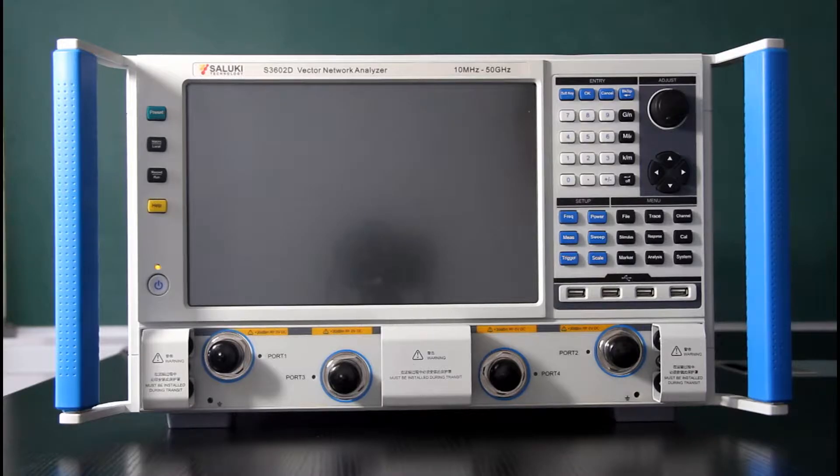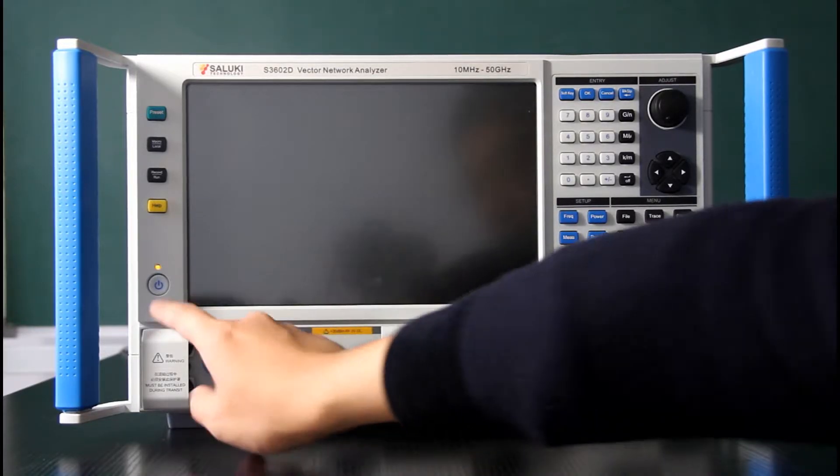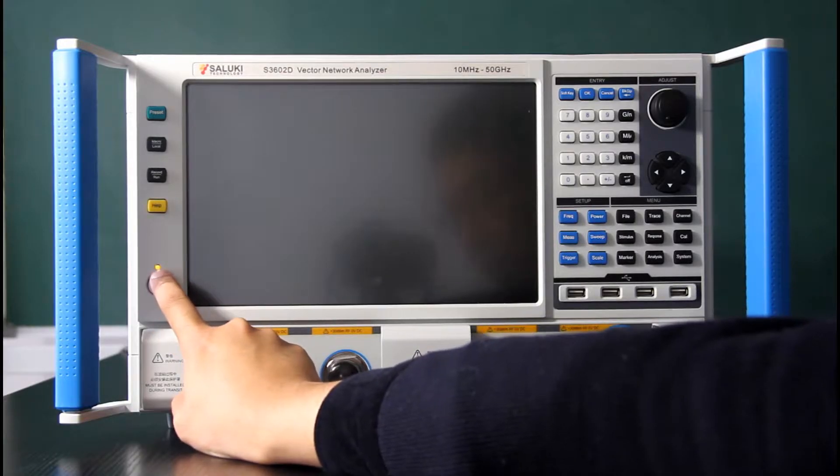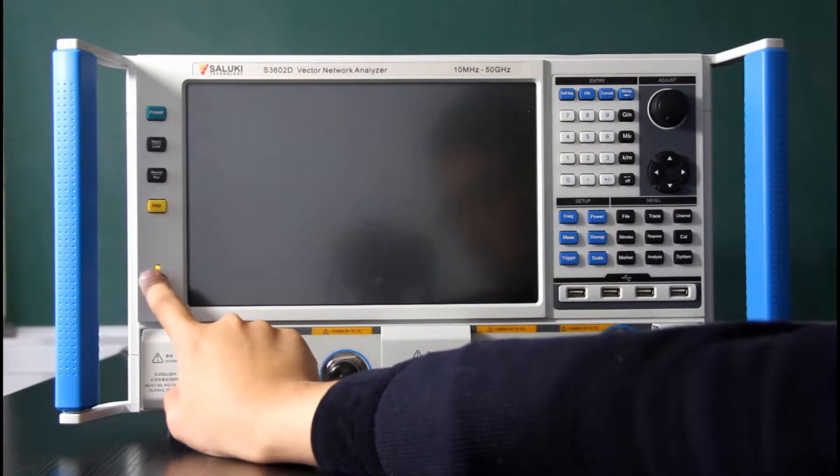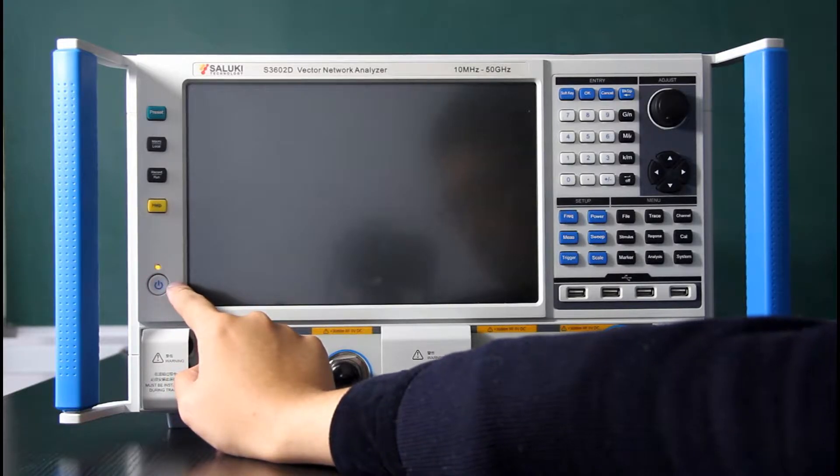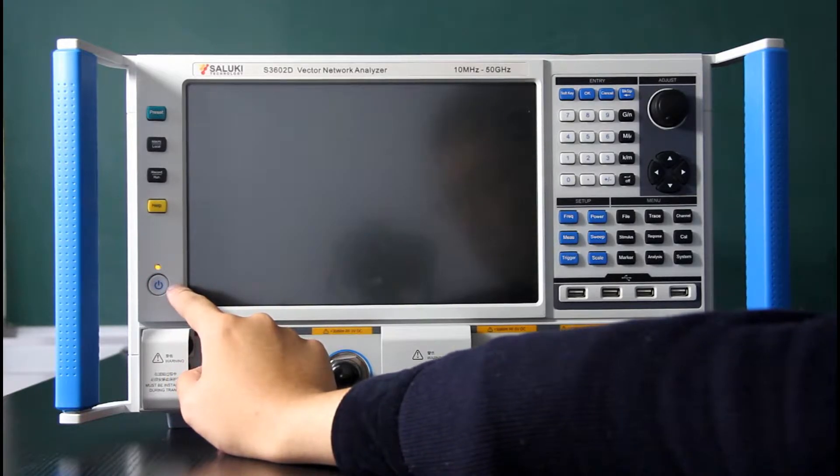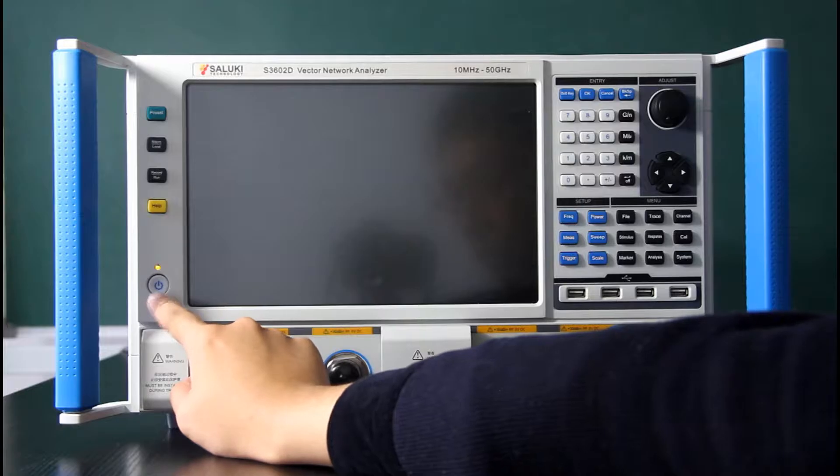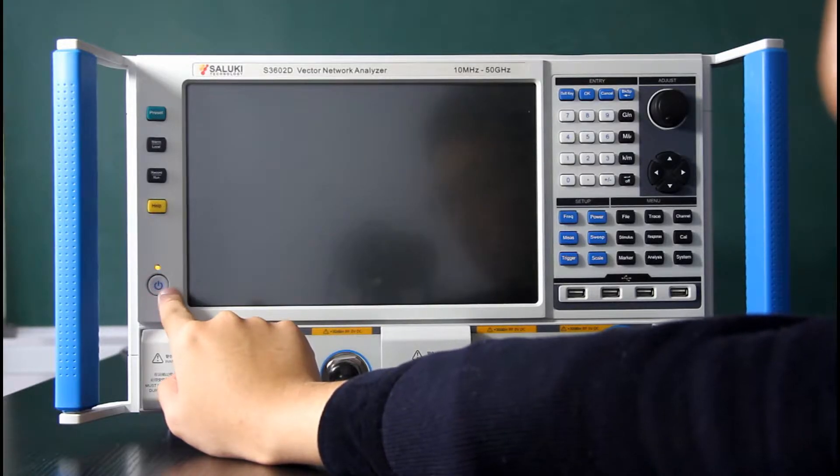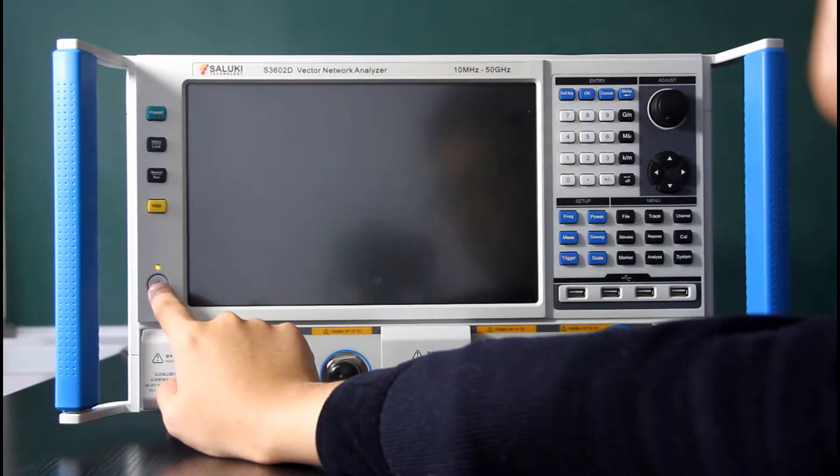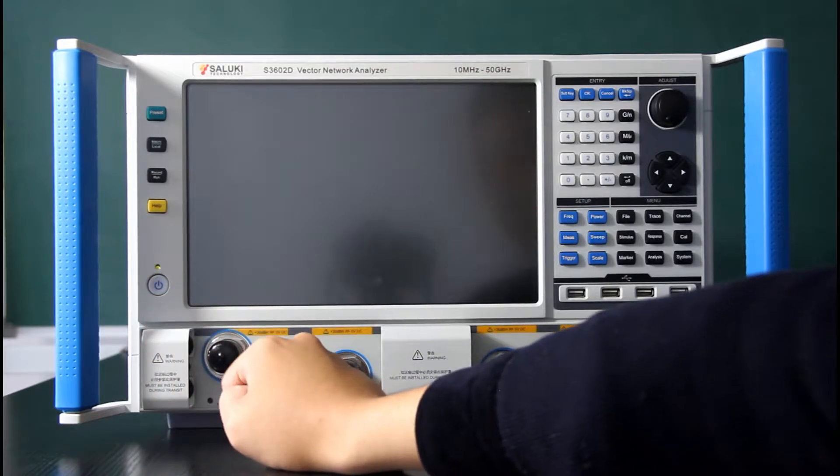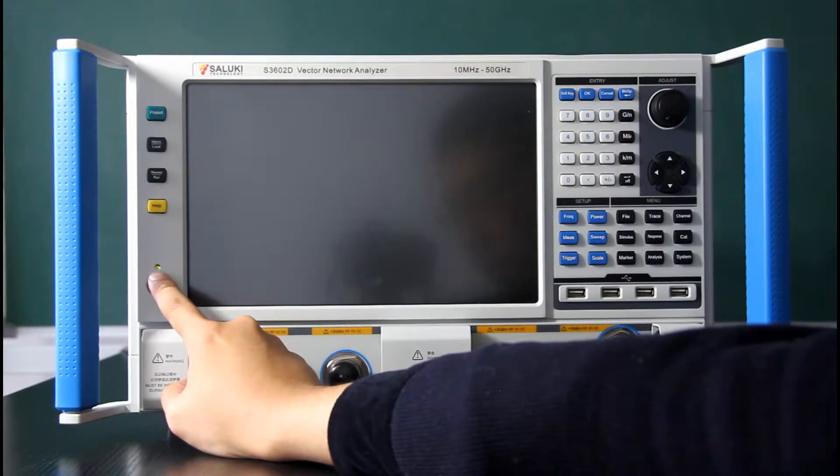Now we are looking at the front panel. You can see here the indicator shows orange, that means the power is connected but the instrument is not powered on. We should press this switch button to turn on this instrument. Now we turn it on, you can see the indicator show green.